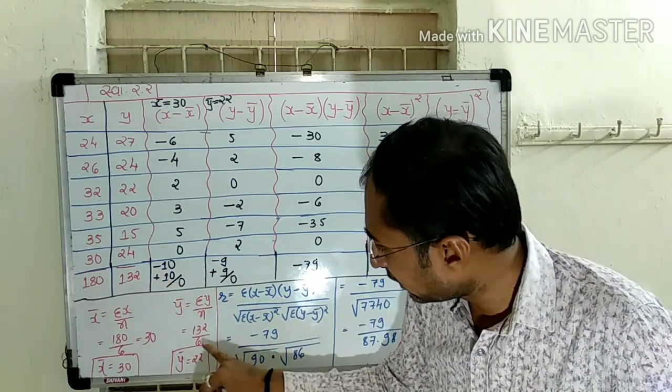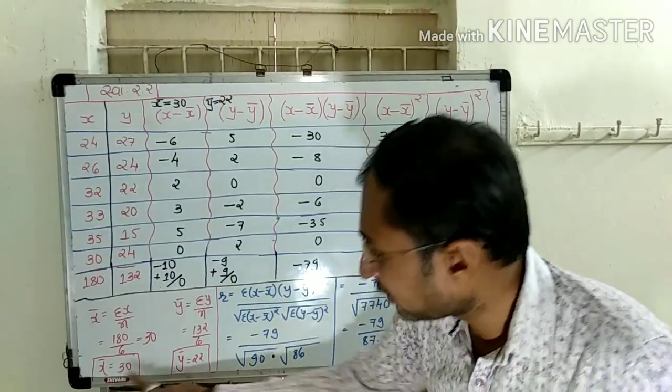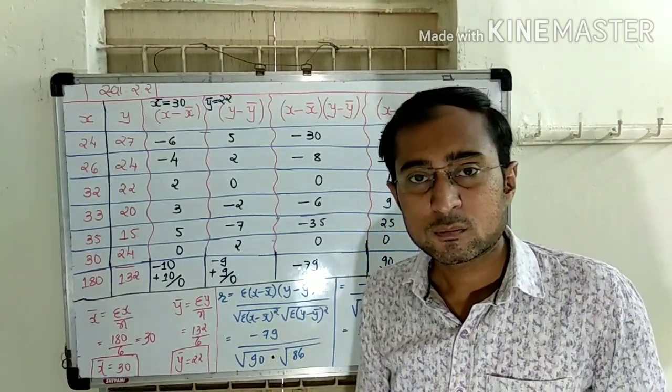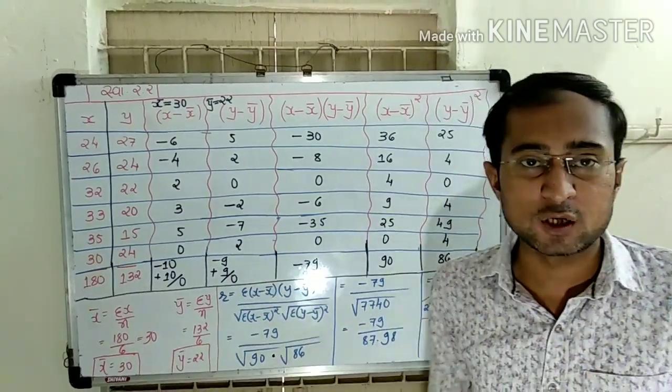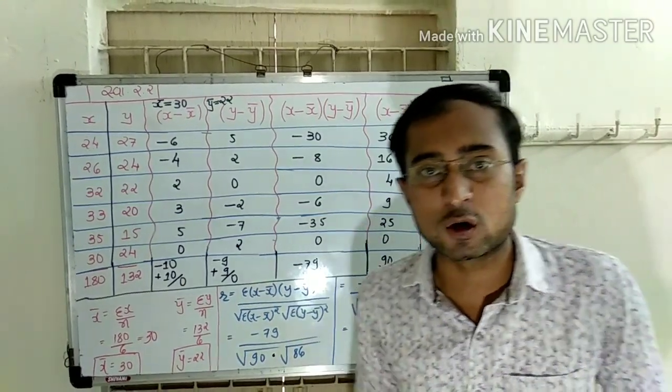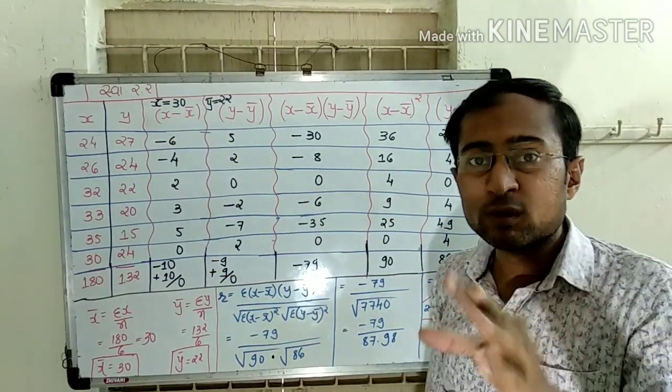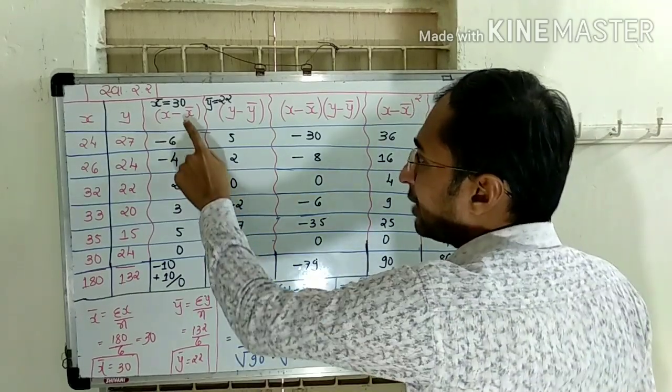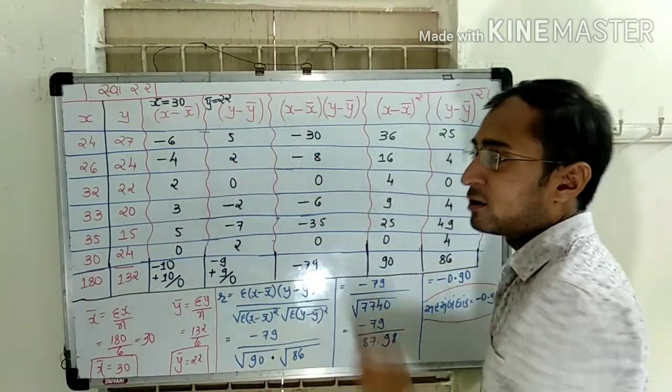This is the value of x and y. The value is 1. This is the value of x minus x bar. This value is x minus x bar, and this value is y minus y bar.